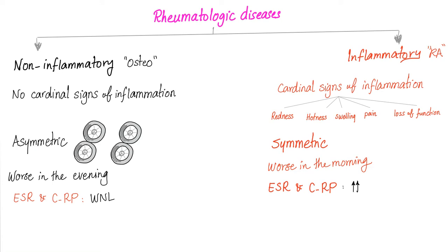Non-inflammatory arthritis is asymmetrical — it affects the right knee and left knee at different rates. One will develop arthritis before the other, and one may be more severe. This is because the process is mechanical, wear and tear. Like the tires on your car, they don't wear out at the same rate.